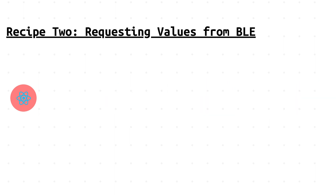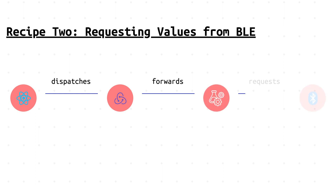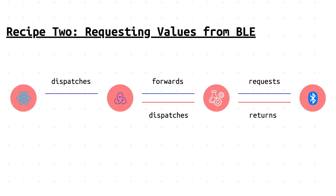The second recipe looks similar to the first but has a key difference — there's no continuous listening. We simply request values from the peripheral and get back responses. We start by dispatching an action to request a value from the BLE singleton using a thunk. Redux forwards the action to the thunk middleware. The thunk requests a value from the BLE manager, the BLE manager returns a value, the thunk dispatches an action with that value to the store, and the selector updates the UI.